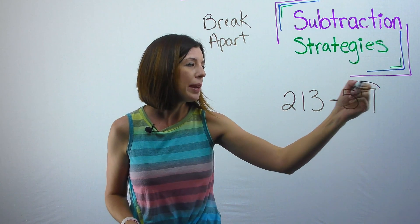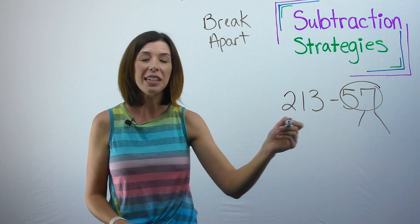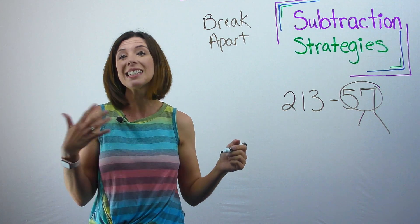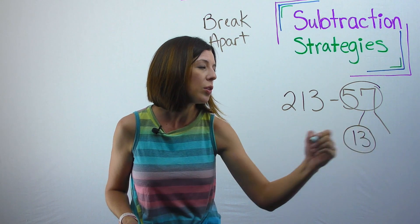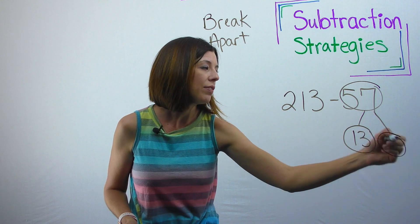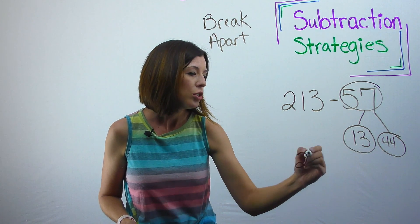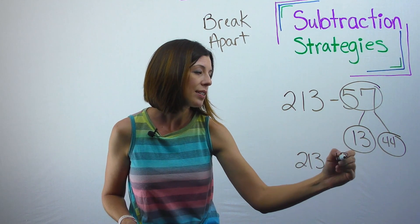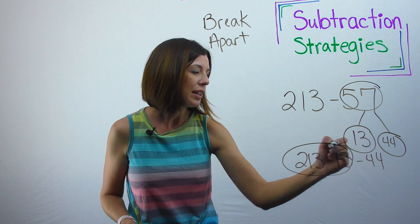So I'm going to break apart 57 into, I see that I got this 13 here. And if it was just, if I could get it to zero, that would be awesome. So I know that this can be broken down into 13, which would leave this as 44. So basically I'm thinking of it as 213 minus 13 minus 44. I know that this is going to give me 200.